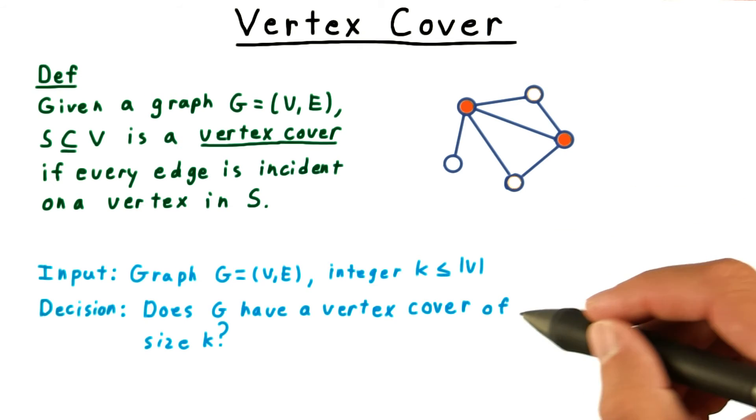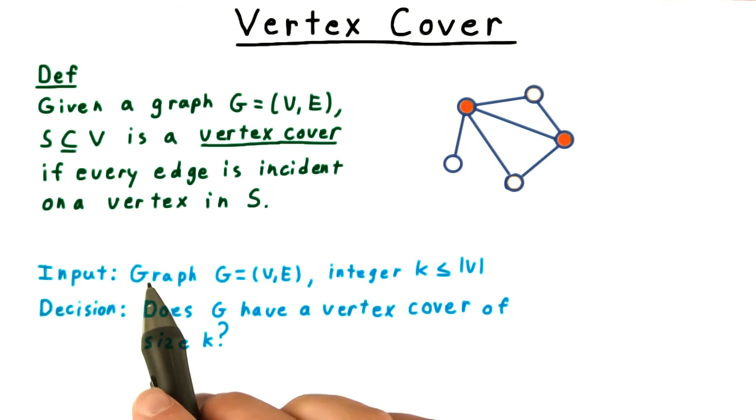Or, phrased as a decision question, we're given a graph G and an integer K, at most the number of vertices. The question is, does G have a vertex cover of size K?